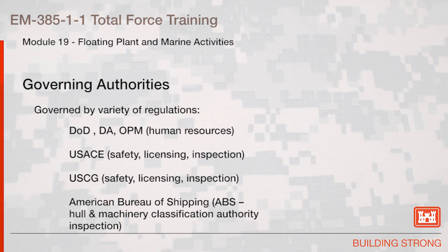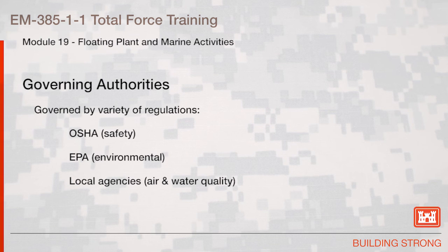Some of the governing authorities for floating plant operations include Department of Defense, Department of Army, and Office of Personnel Management for Human Resources; U.S. Army Corps of Engineers for safety, licensing, and inspection; U.S. Coast Guard for safety, licensing, and inspection; American Bureau of Shipping (ABS) as the Hull and Machinery Classification Authority and for inspections; Occupational Safety and Health Administration for safety; Environmental Protection Agency for environmental concerns; and Local Agencies for air and water quality.